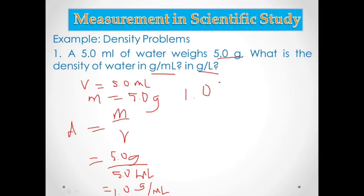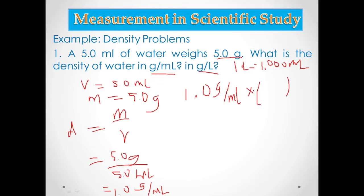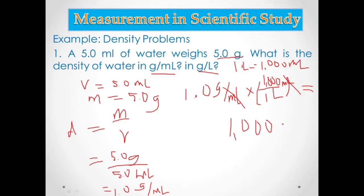We only need to convert the volume. Since mL is at the denominator, put 1,000 mL at the numerator and 1 liter at the denominator to cancel units. That gives 1 times 1,000 equals 1,000 grams per liter. So the density is 1,000 grams per liter.